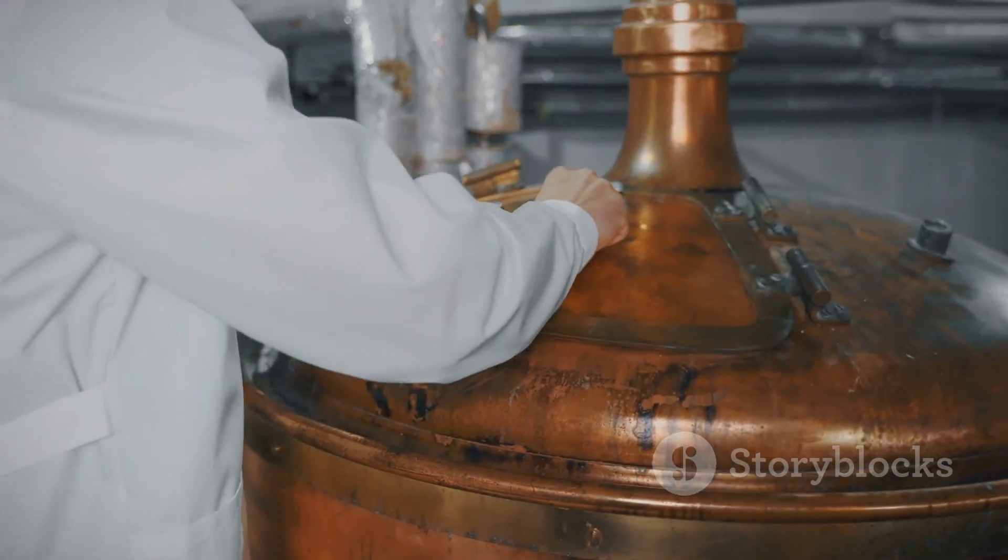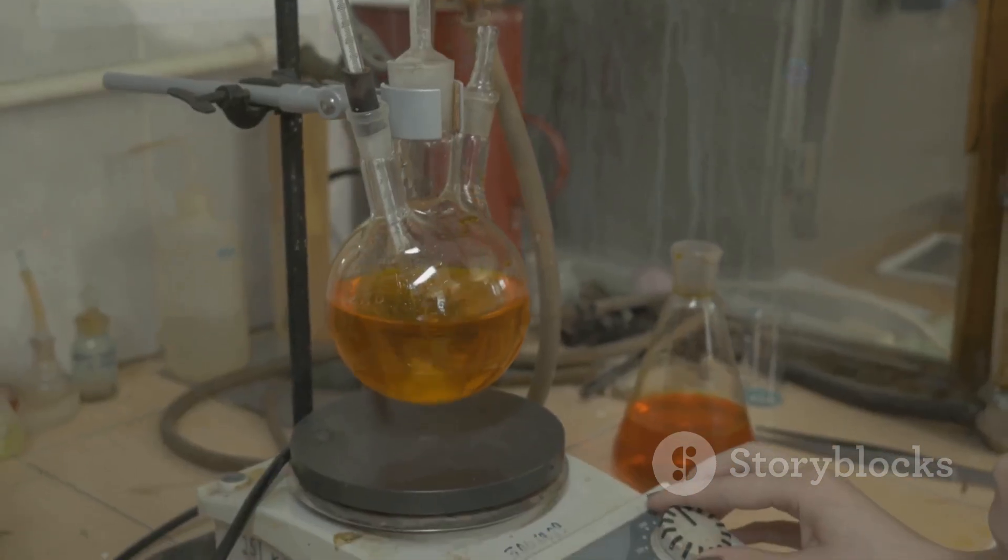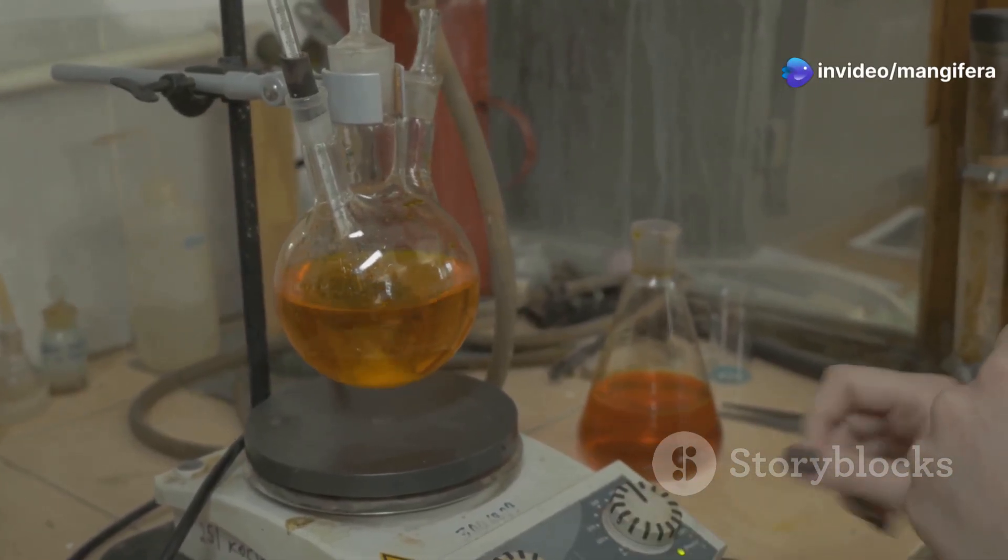Here's how it all goes down. Picture this. You have a mixture of ethanol and water. Adding an entrainer, say benzene, disrupts their interaction.